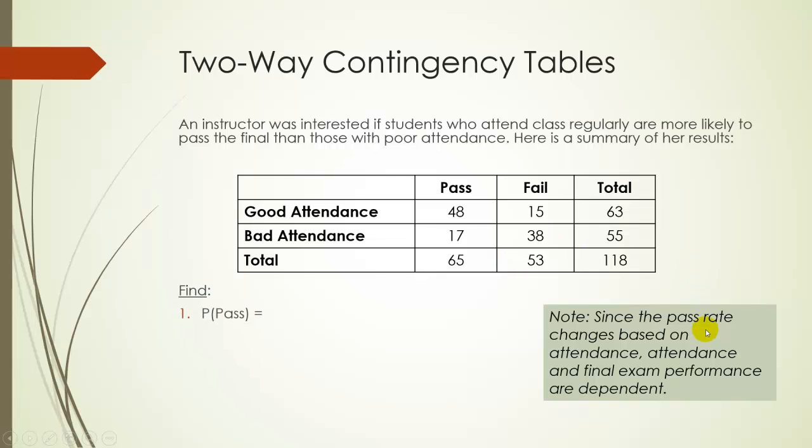Let's find the probability that a student passes and then let's also find the probability that a student passes given that they had good attendance and the probability that a student passes given that they had bad attendance. To find the probability that a student passes there are 65 students that passed out of a total of 118 students. So that will give us a 65 out of 118 chance that a student passes, 55.1 percent approximately.